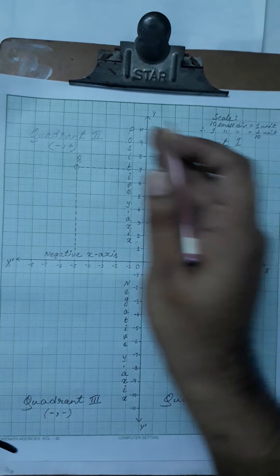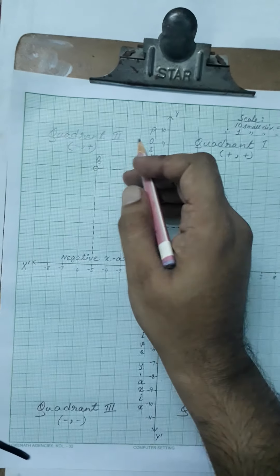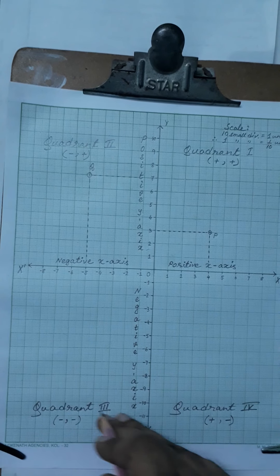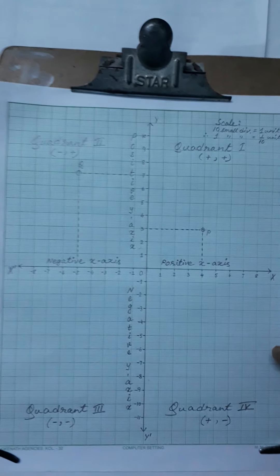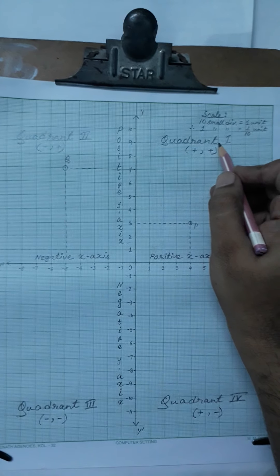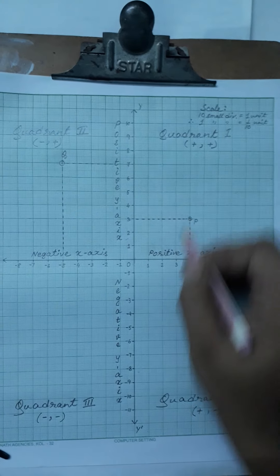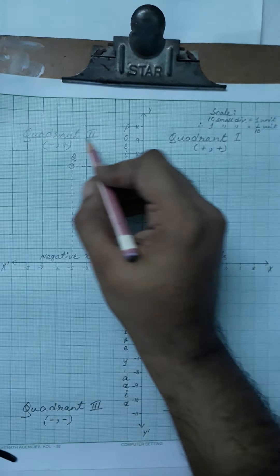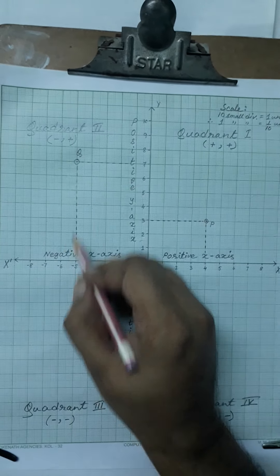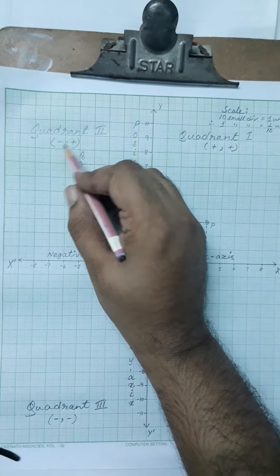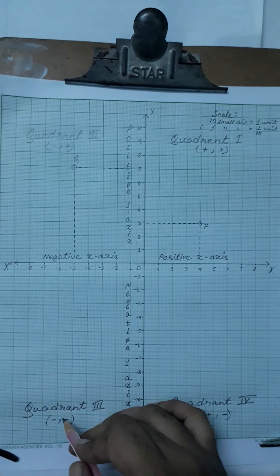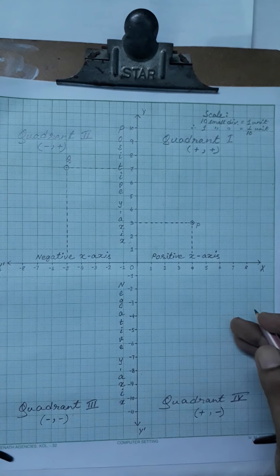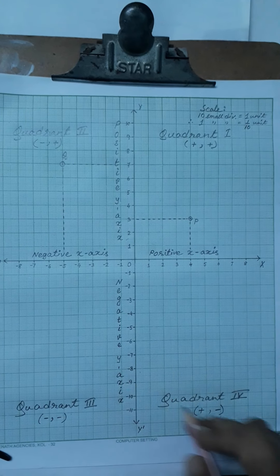From O to Y is called the positive y-axis and O to Y' is the negative y-axis. When they intersect perpendicularly, four regions are formed. The first region is called quadrant one, the second is quadrant two (anticlockwise), the third is quadrant three, and the last is quadrant four. Any point in quadrant one has x positive and y positive. In quadrant two, x is negative and y is positive, so the coordinate is (−, +).